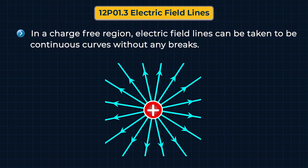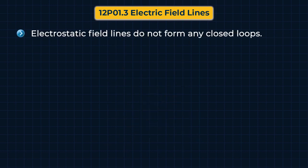The last rule is that electrostatic field lines do not form any closed loops. Since electric field lines start from positive charges and end at negative charges, or start and end at infinity, they cannot form closed loops.